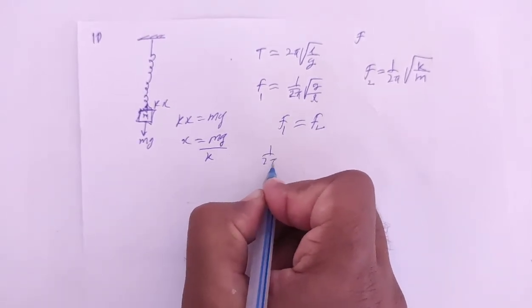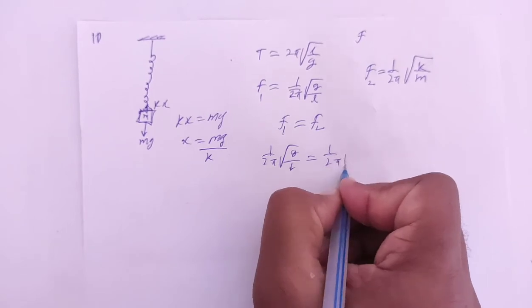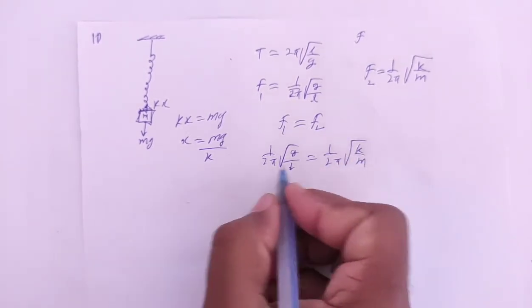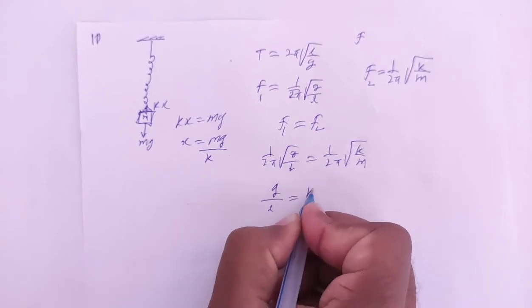1/(2π)√(g/l) equals 1/(2π)√(k/m). So 1/(2π), 1/(2π) and roots cancel, therefore g/l equals k/m.